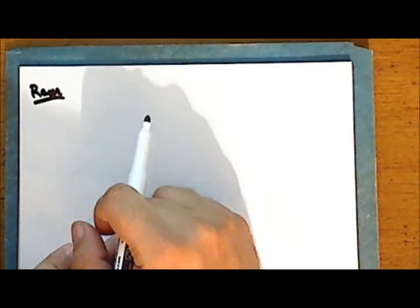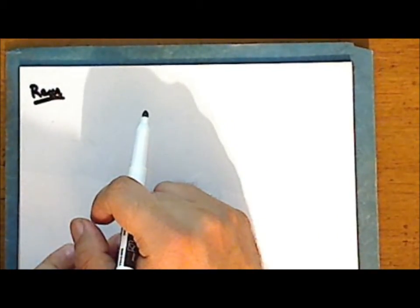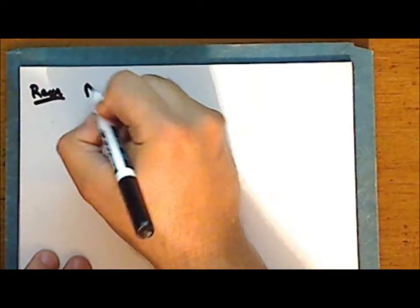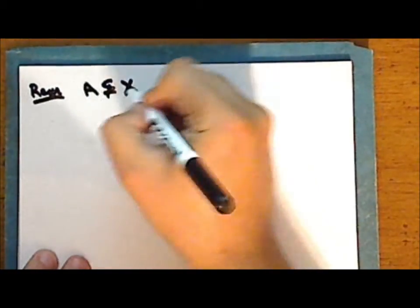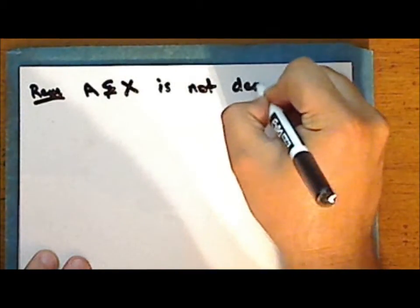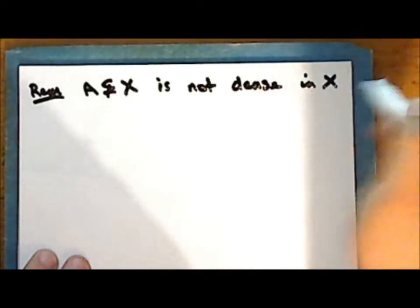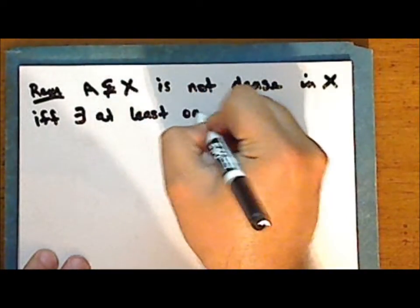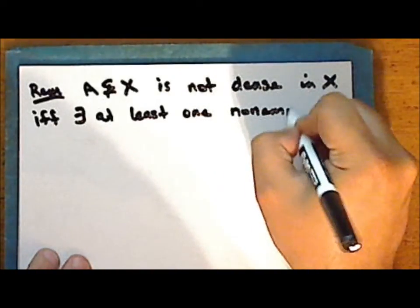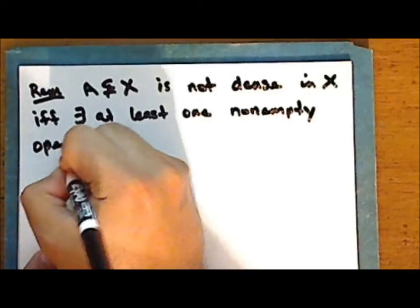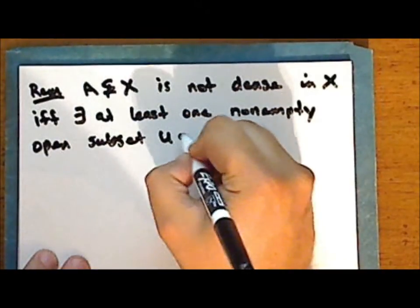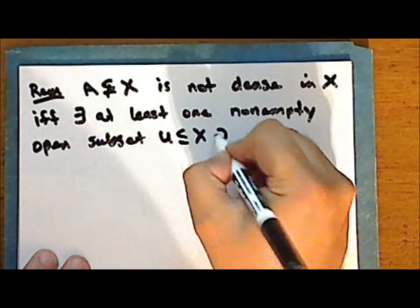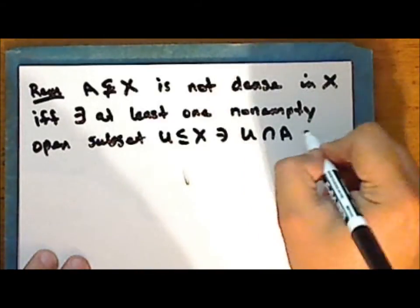An equivalent statement is the contrapositive: a proper subset A of X is not dense in the space if and only if there exists at least one non-empty open subset U of X such that the intersection of U with A is empty.